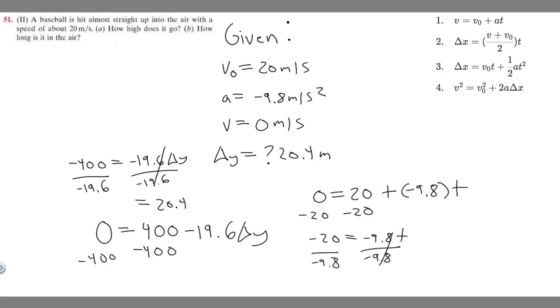Dividing by minus 9.8 is going to give you the number of seconds. If you do this you should get t equals 2.04 seconds, but this isn't going to be your final answer. The reason is because remember, zero is when it reaches its highest point in the air. At this point it doesn't have any velocity - that's essentially what we just solved for.